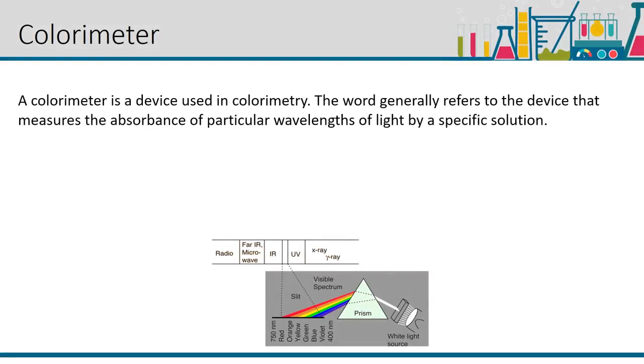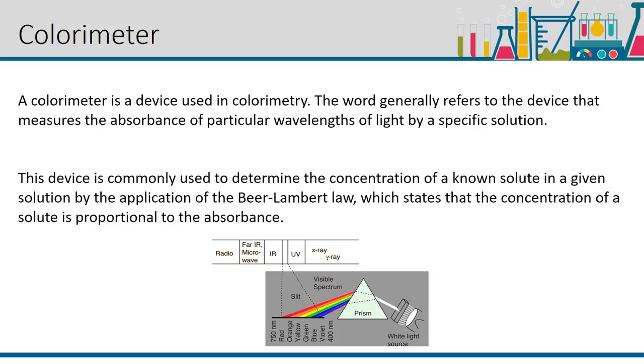A colorimeter is a device used in colorimetry. The word generally refers to the device that measures the absorbance of particular wavelengths of light by a specific solution. This device is commonly used to determine the concentration of a known solute in a given solution by the application of the Beer-Lambert law, which states that the concentration of a solute is proportional to the absorbance.